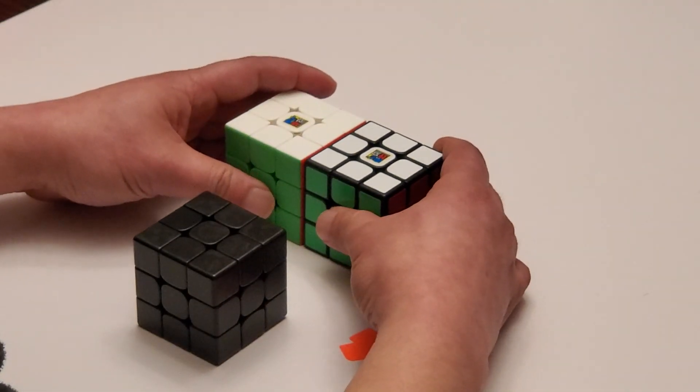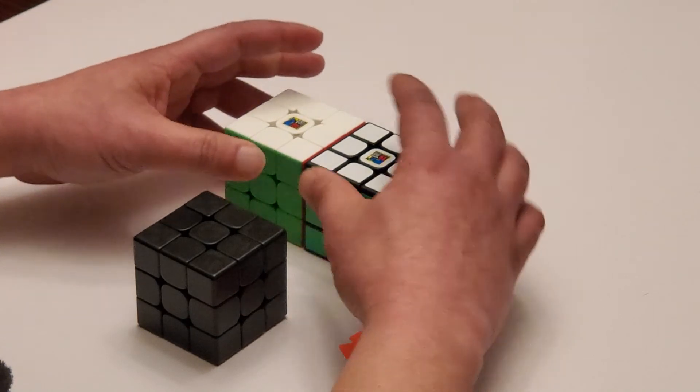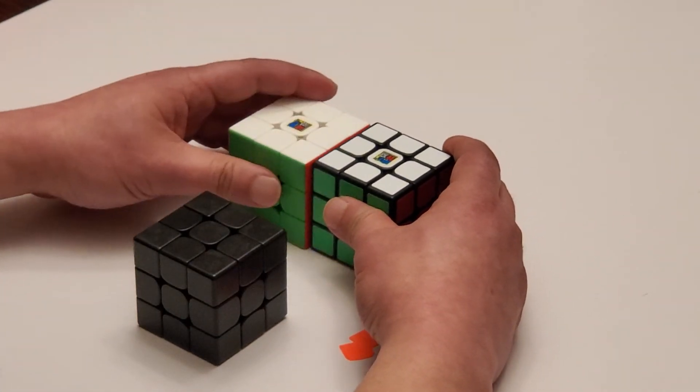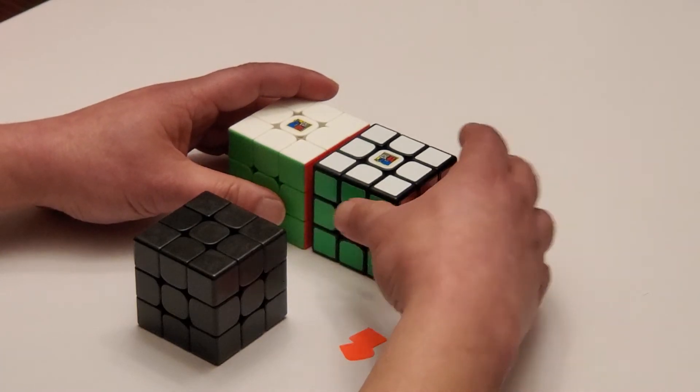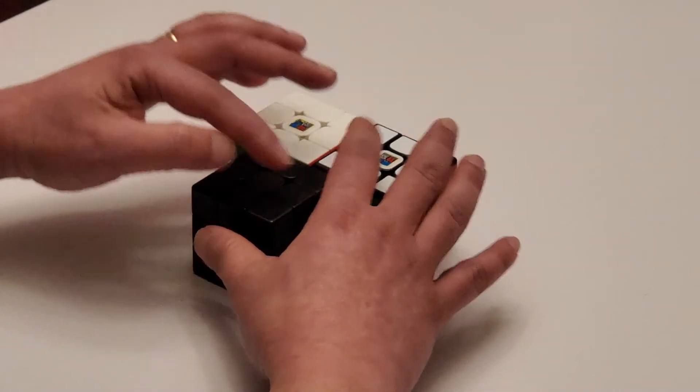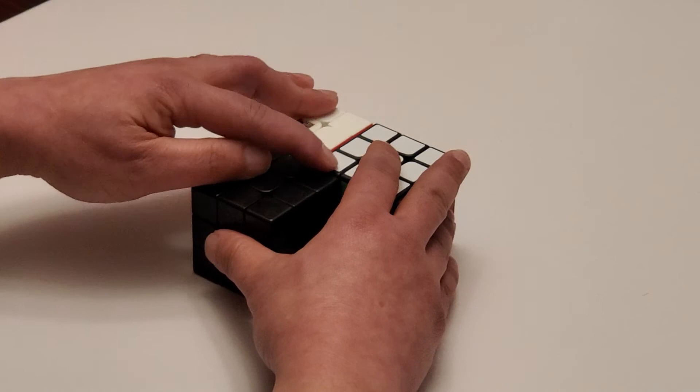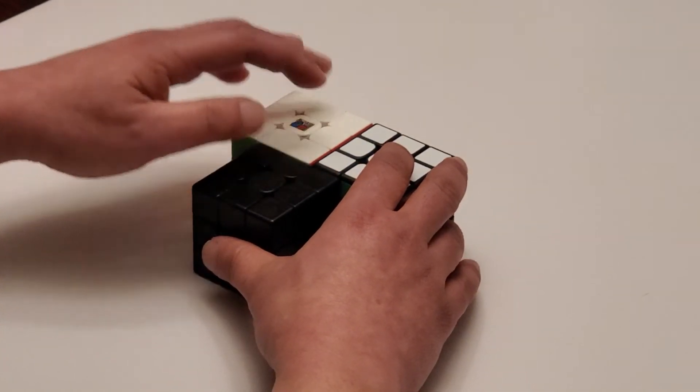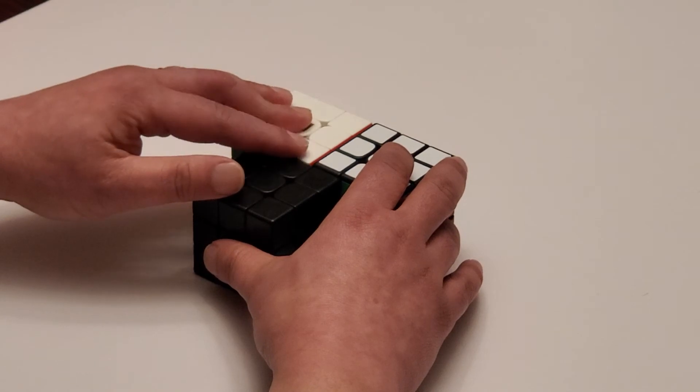So when I first got these cubes, I thought this was bigger, but I thought it was just an illusion because of this black part. But now when I do this without the stickers, I do feel that the one with stickers is taller compared to this, which is the same height.